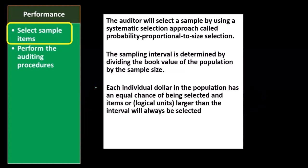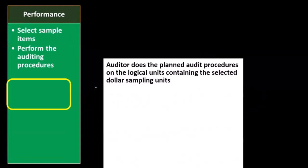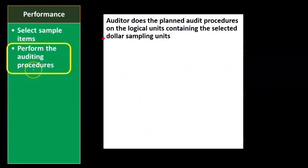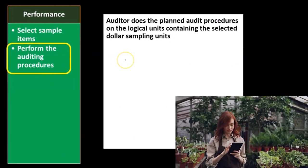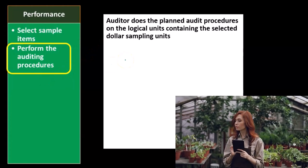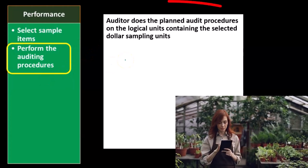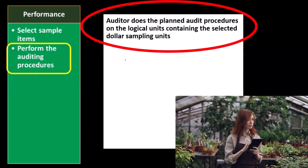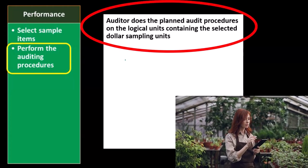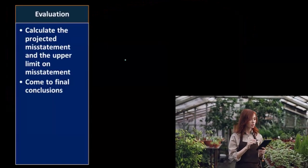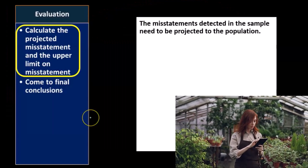Items or logical units larger than the interval will always be selected. After we have the selected sample items, we will perform the auditing procedures. The auditor does the planned auditing procedures on the logical units containing the selected dollar sampling units.